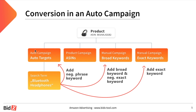Now I will transfer this situation to an auto campaign. We have a search term that converts in the auto campaign. This search term is then transferred to all manual campaigns — meaning it is created as a keyword in the broad campaign and as a keyword in the exact campaign, and is also excluded as phrase negative in the auto campaign to avoid distribution. In addition, this keyword is also excluded as negative exact in the broad campaign.